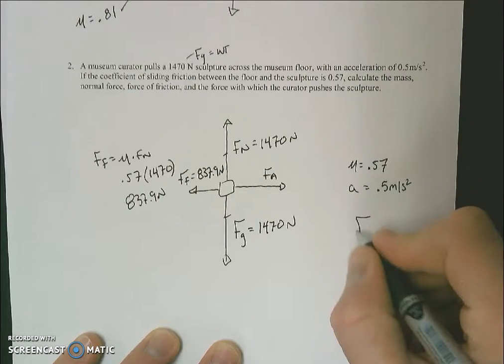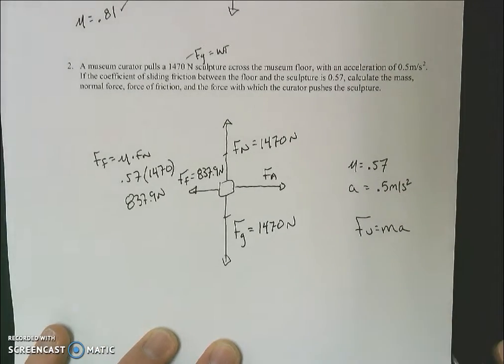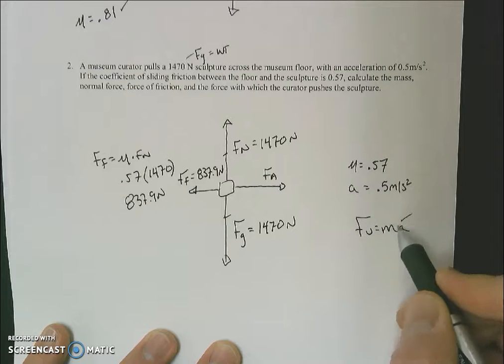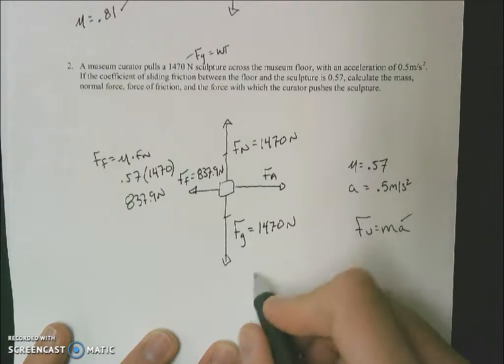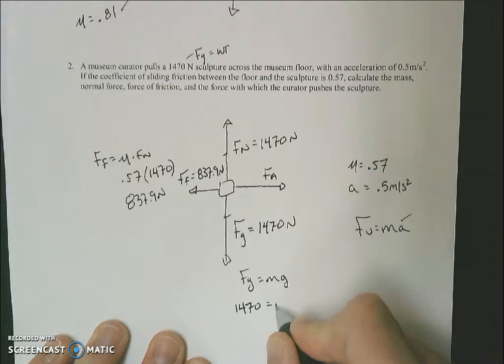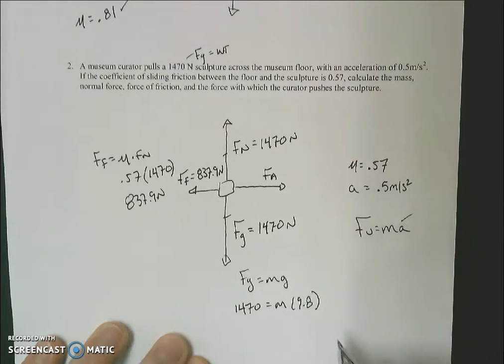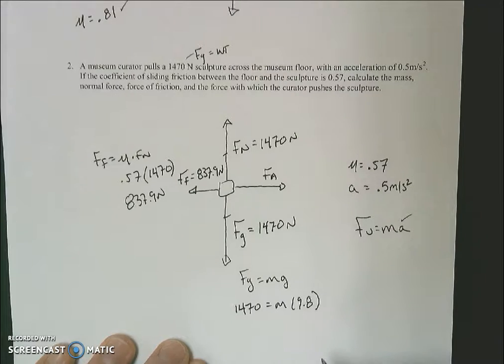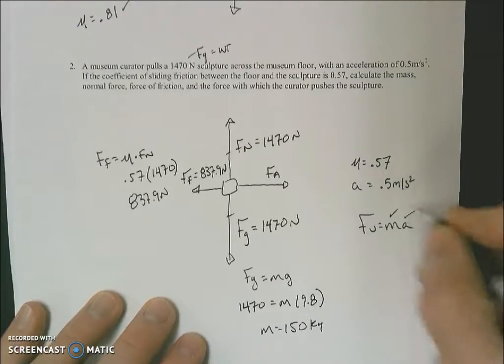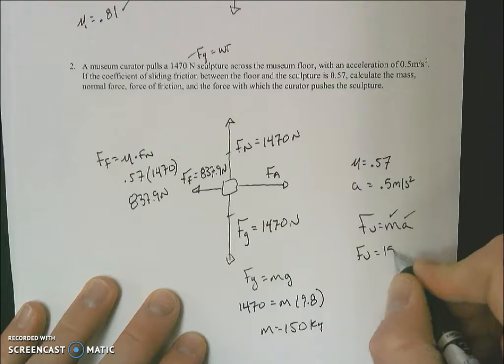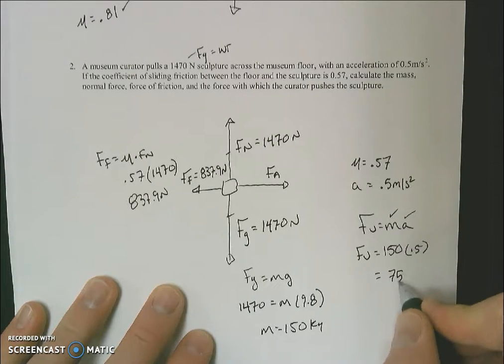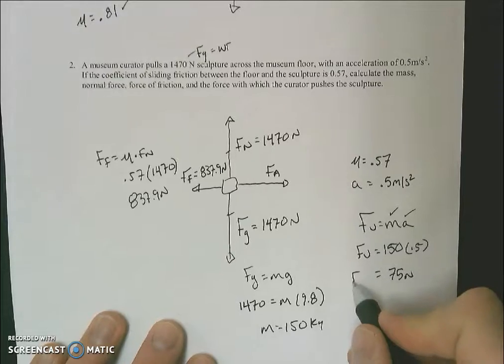What I need to do now is try to figure this out. I have an acceleration. The acceleration is rightward, which means my applied force is larger than my force of friction. That means I have an unbalanced force. Anytime we have unbalanced forces, we use FUMA. I have the acceleration. I don't have the unbalanced force. I don't have the mass, but I can find it. We know force of gravity is mass times gravity. If my force of gravity is 1470, gravity is 9.8, I divide both sides by 9.8. That gives me a mass of 150 kilograms.